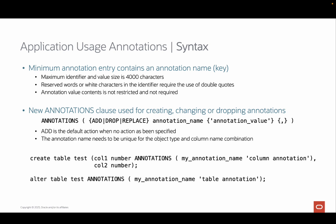The annotation value is not required — you can create an annotation name without a value. If you want to specify a value, you need to enclose it in single quotes and its size must be under 4,000 characters. You are allowed to put anything you want into the annotation value, from plain text to XML to JSON, as long as the size is below 4,000 characters.